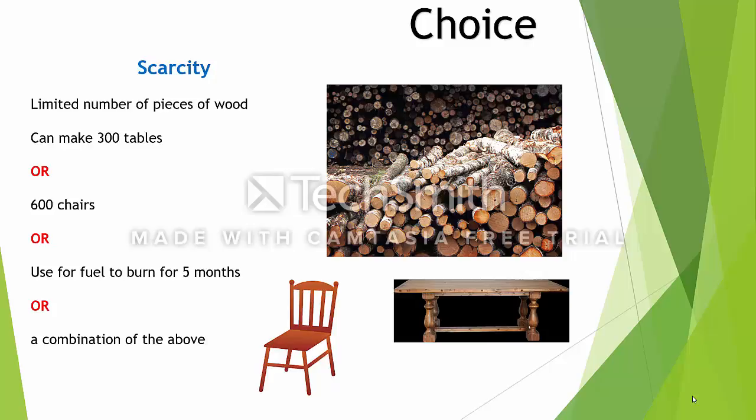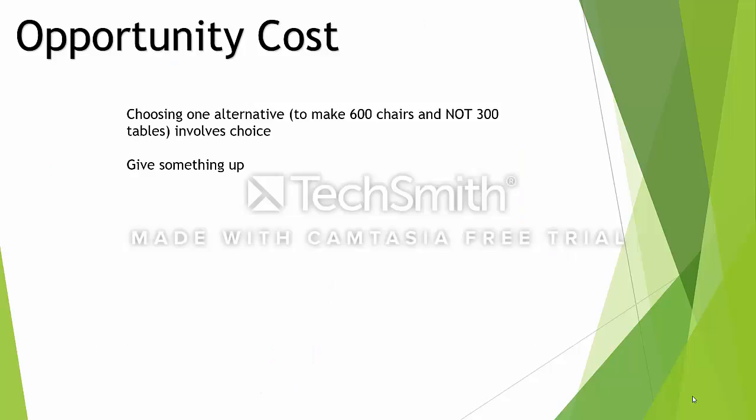But we can't have 300 tables and 600 chairs, or 600 chairs and the fuel to burn for five months. There is some choice involved that we're going to have to make. If we wanted, say, 150 tables and 300 chairs out of that wood, that still involves choice because we can't have everything we want, so we're going to have to make some choices in this use of the wood. This is where opportunity cost comes in for economists, because by choosing one alternative we have to give something else up.